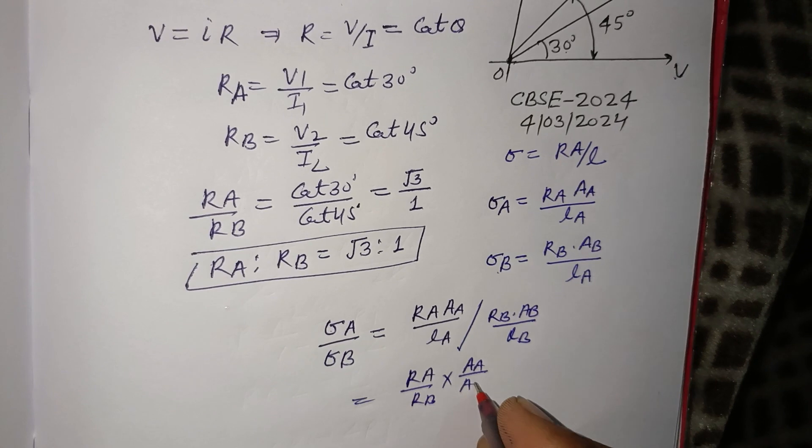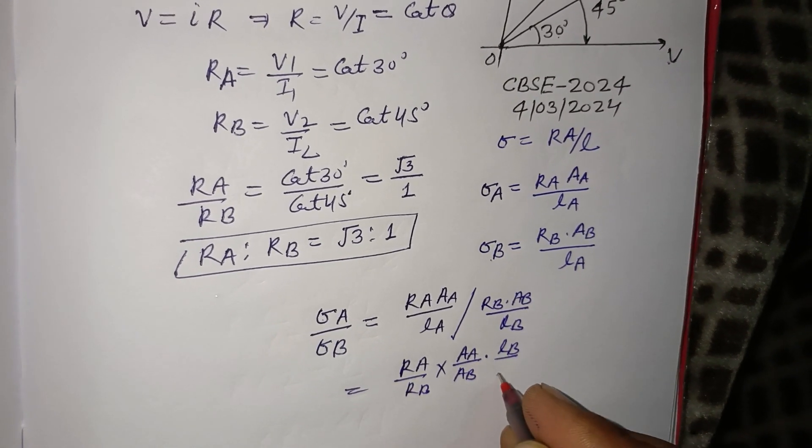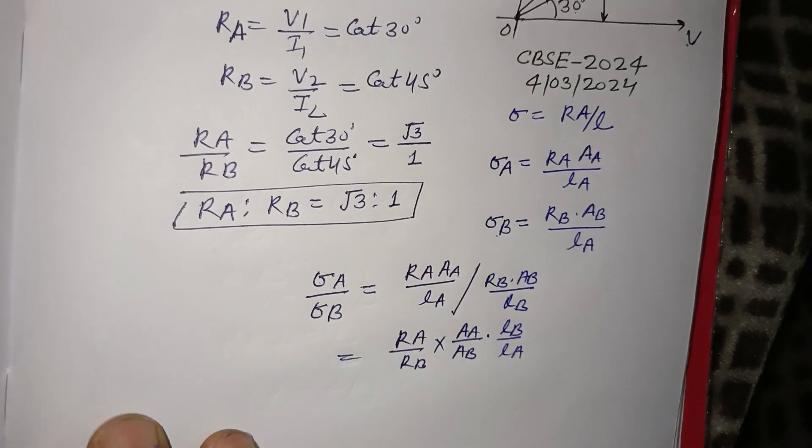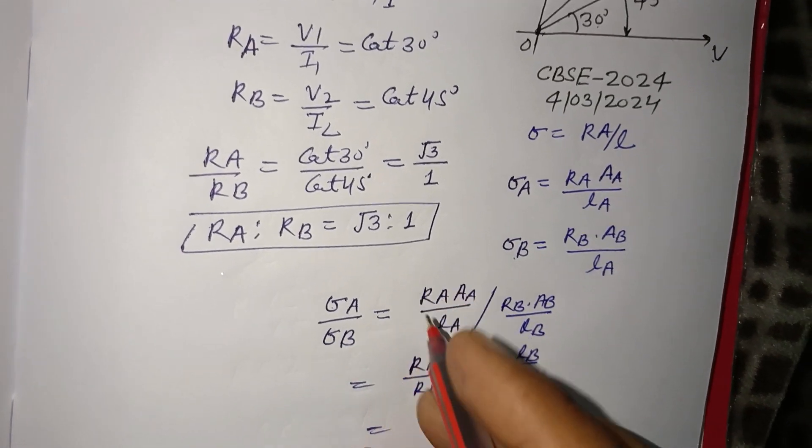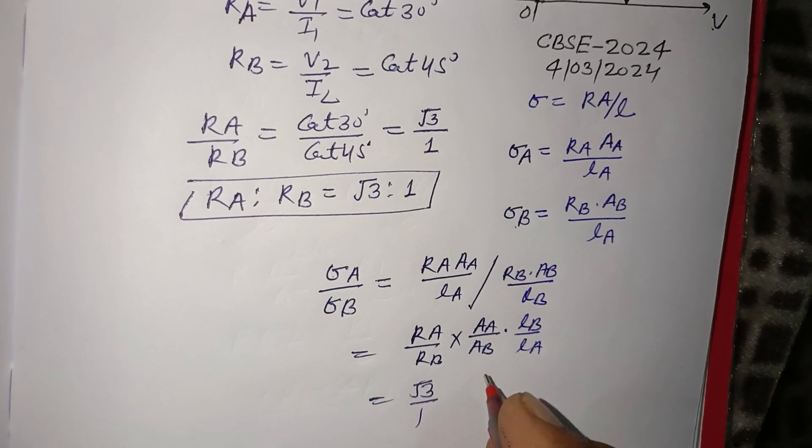Putting all the values, RA/RB is obtained initially as √3/1.